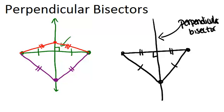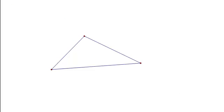Something interesting happens when you look at a triangle and create the perpendicular bisector of all three sides. We're going to go into Geometer Sketchpad to investigate this. Starting with a random triangle, the first thing I'm going to do is find the midpoint of each of the three sides in order to start constructing the perpendicular bisectors. There are the three midpoints.